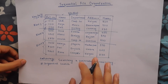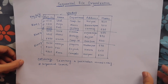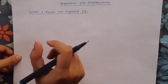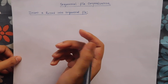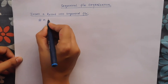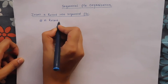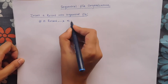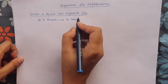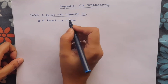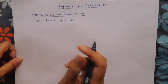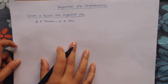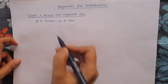Now we look at the disadvantages of sequential file organization. When we want to search a record and there are N records, in the worst case we may have to search N times — N number of searches — because the file stores and searches data in sequential manner. The next problem is when we want to insert a record into a sequential file.